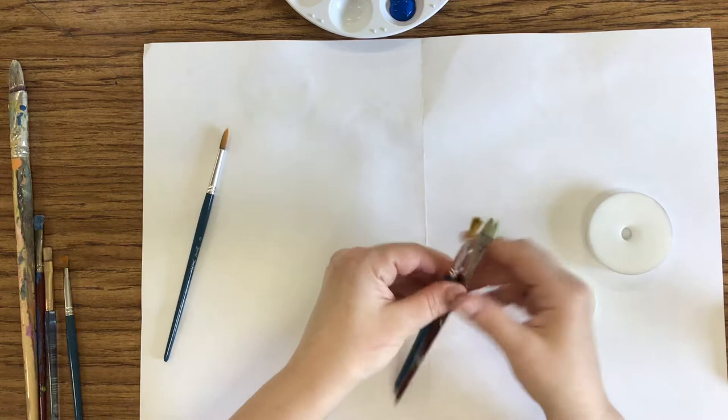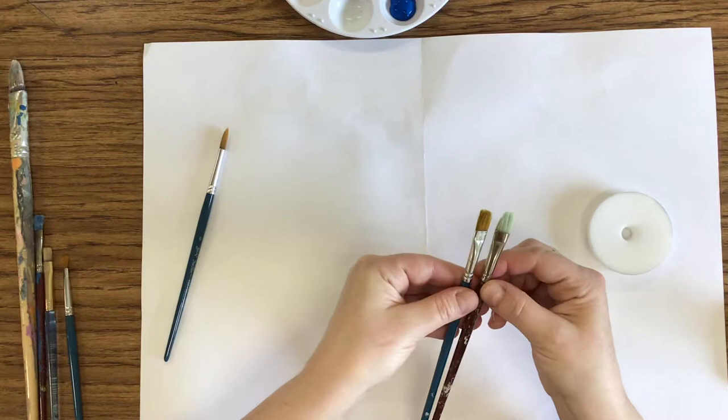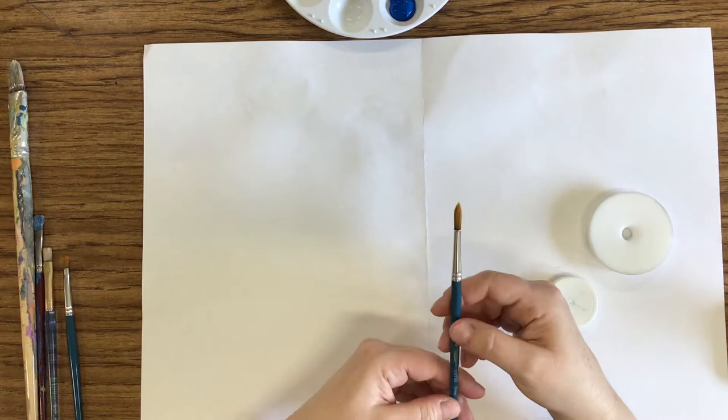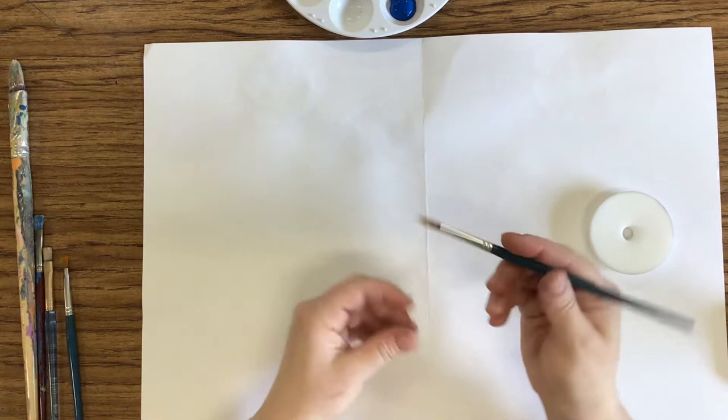There are two types of paint brushes that you picked up. You have what's called a flat—these are smaller flats, but you have different size flats in your collection. Then you also have what's called a round. A round is literally round and more pointed on the tip.